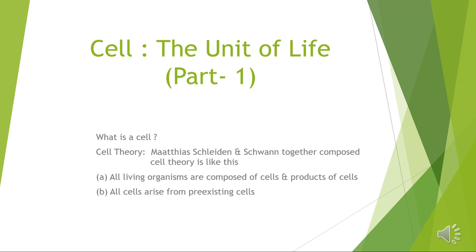Robert Brown discovered the nucleus in an orchid root cell, and Purkinje gave the term protoplasm. This was all studied in 9th standard. Cell theory was given by Matthias Schleiden and Theodor Schwann. Theodor Schwann also described the plasma membrane apart from the cell wall — all cells have a plasma membrane, which is called a selectively permeable membrane.